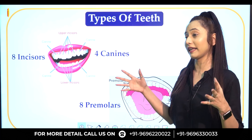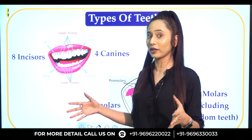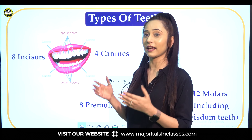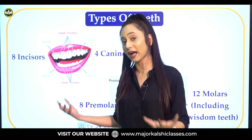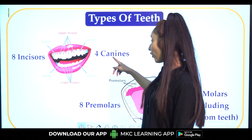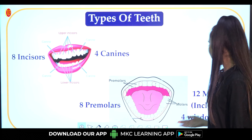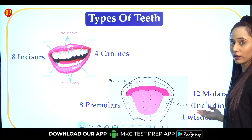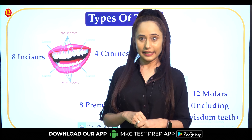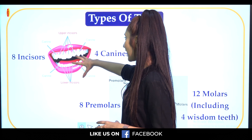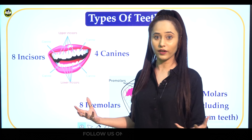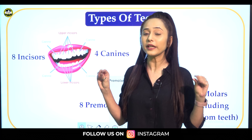First of all, we should know how to calculate our teeth. We have eight incisors, four canines, eight premolars, and twelve molars, along with the wisdom tooth. Incisors are used for cutting, canines for tearing and wearing, premolars for tearing and wearing, and molars for chewing food.